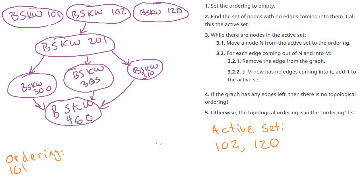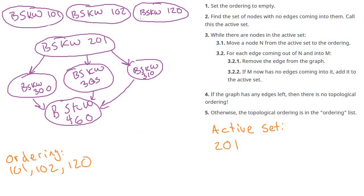We go back to the top of the loop. We move 120 to the ordering, check for edges leaving it — there are none — so nothing changes. Then we go back to the loop again: there's one node in the active set, which is 201, so we schedule that one next.